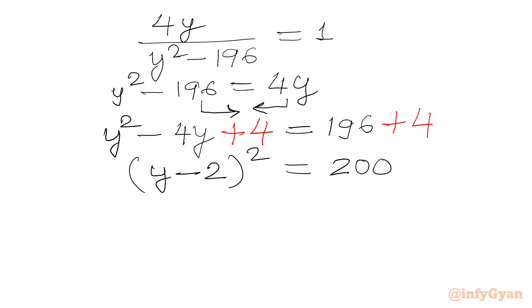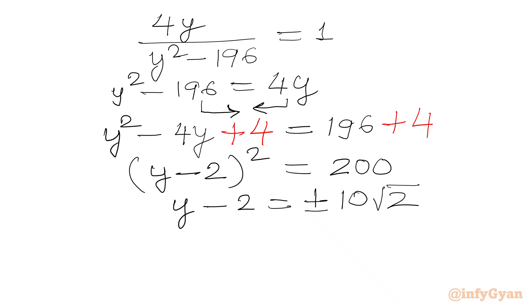We are going to take the square root of both sides. So y - 2 = ±√200 = ±10√2. Adding 2 to both sides, we get y = 2 ± 10√2. Substituting back y = x² - 22x + 71, we have x² - 22x + 71 = 2 ± 10√2.